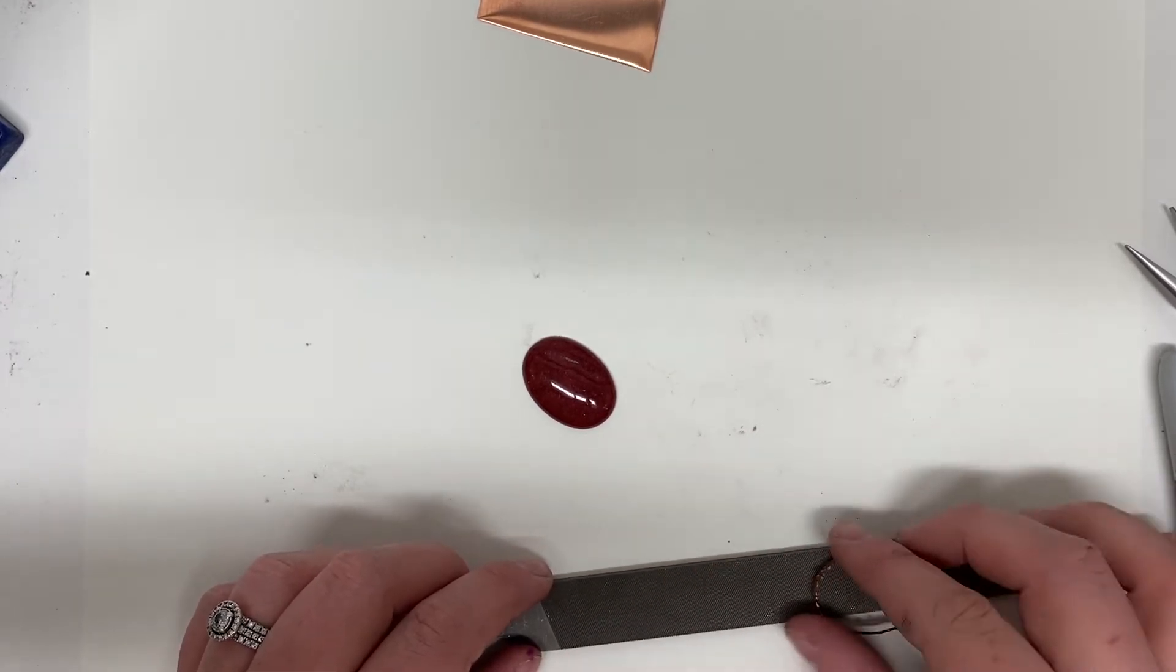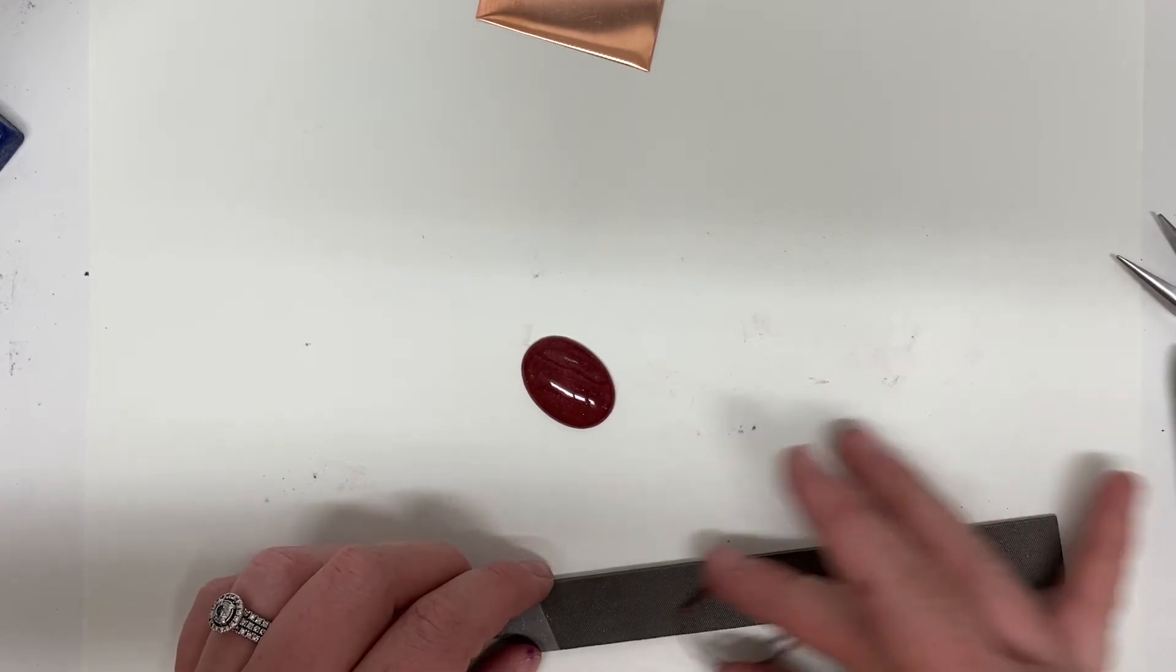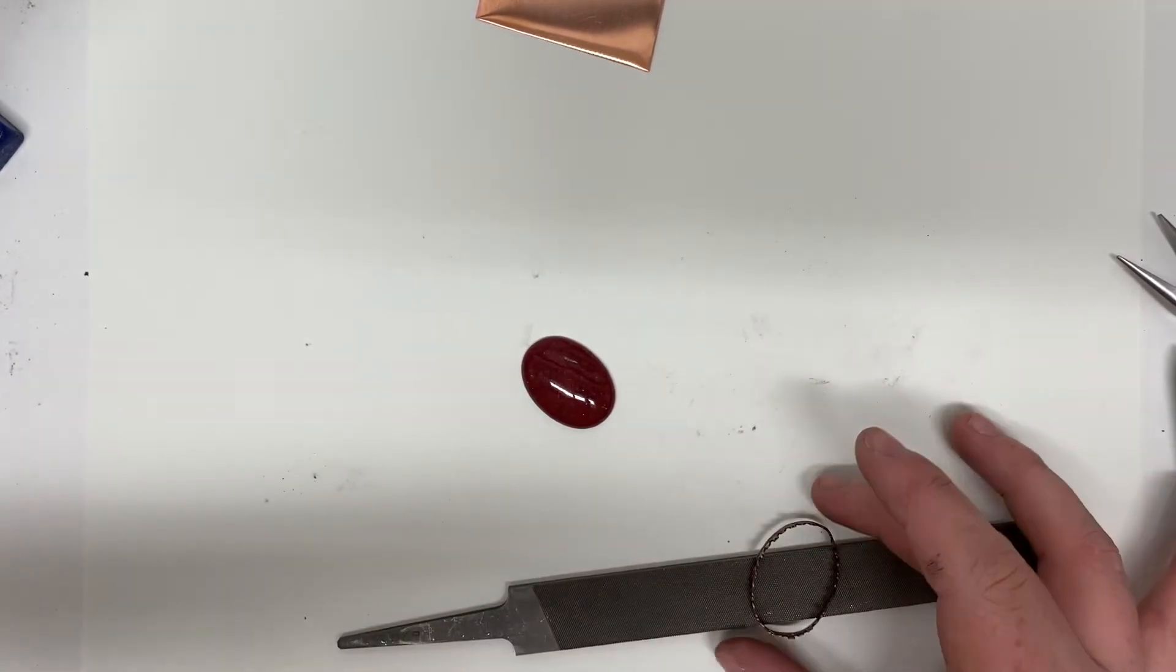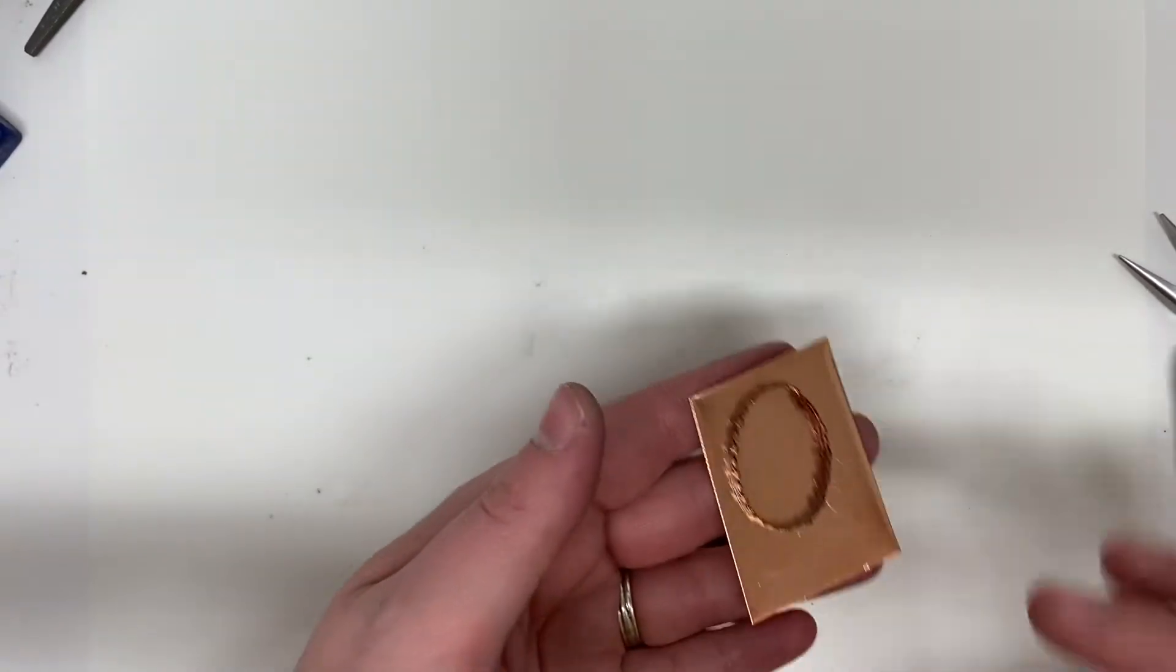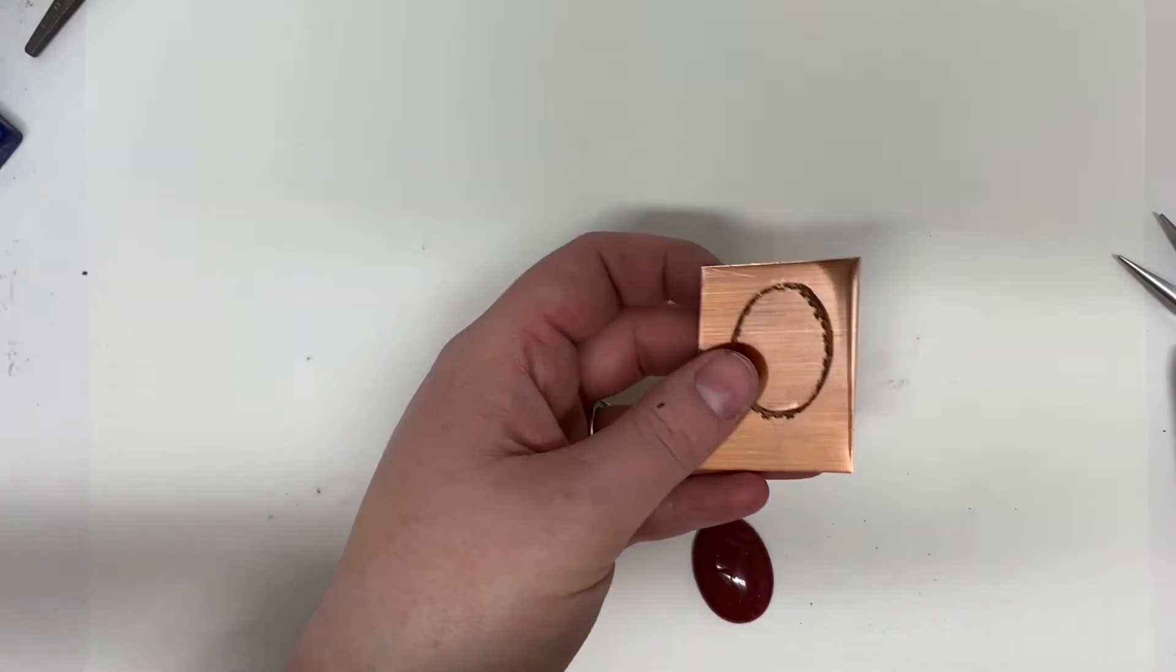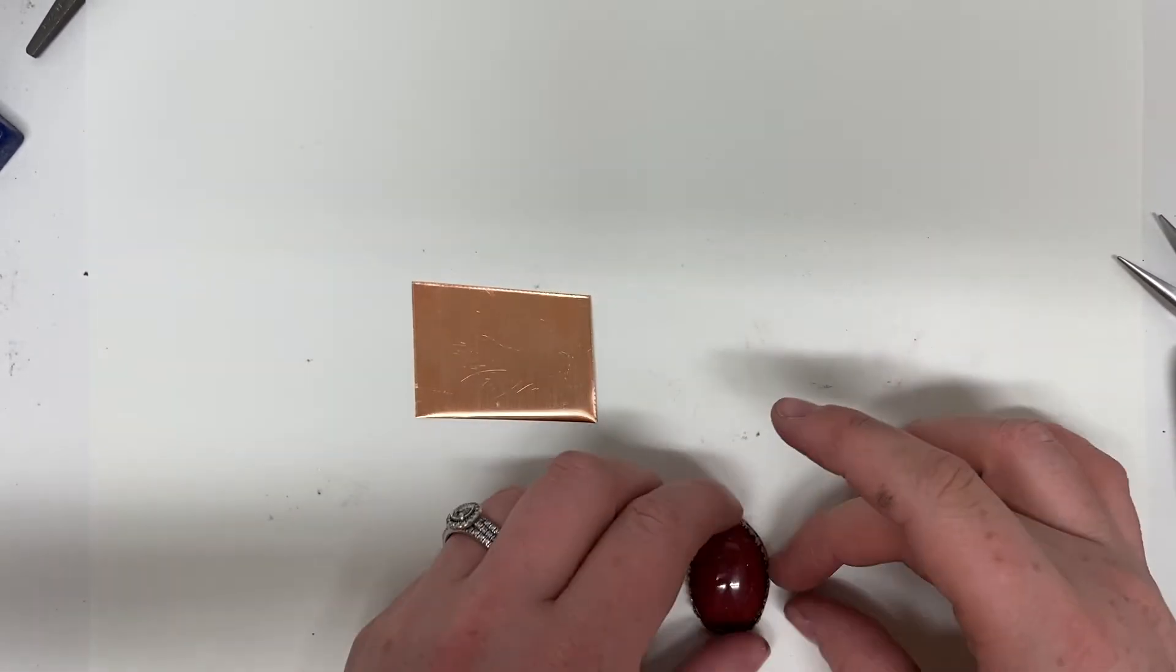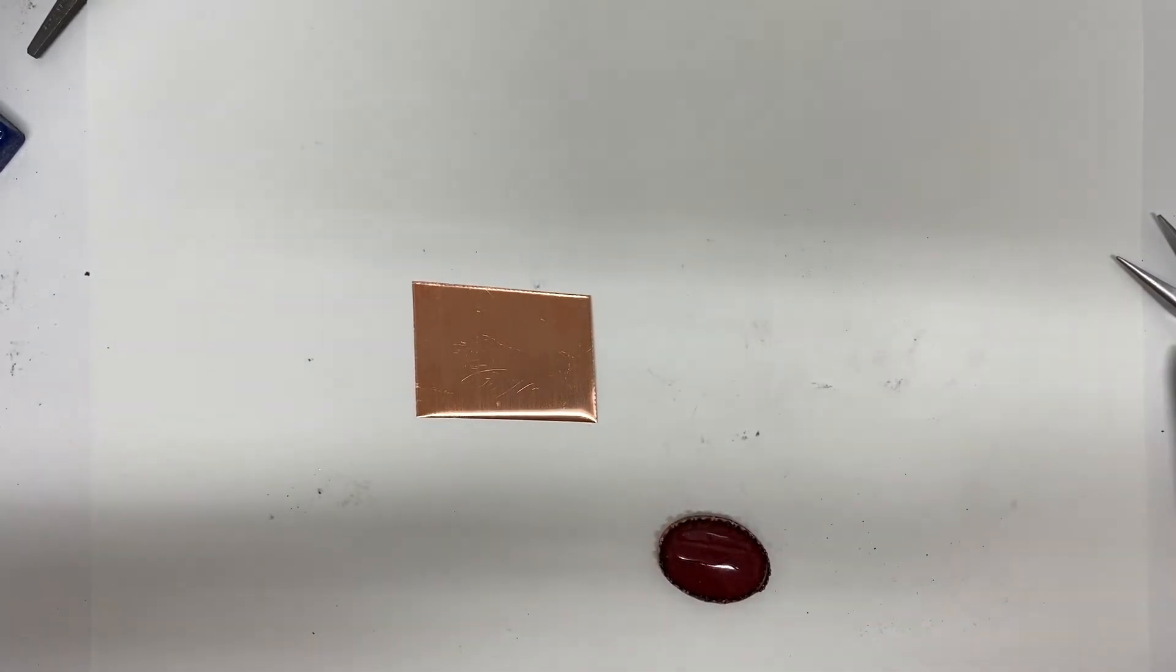Usually you don't have to do that if you've taken the time to make the soldering fit nice. But if you have one side that's a little bit raised, you can do that. But mostly you just want to check that there's no gapping when you eventually solder it to the base. I'm going to spend some time filing, making sure it's precise around my stone. Then we'll move on to the next portion of the project.